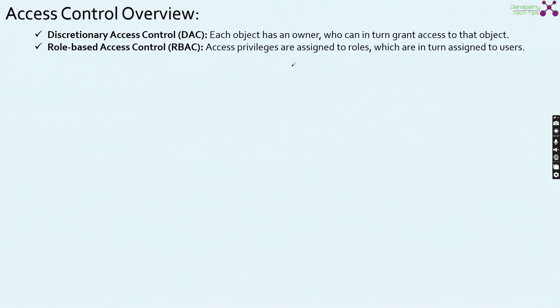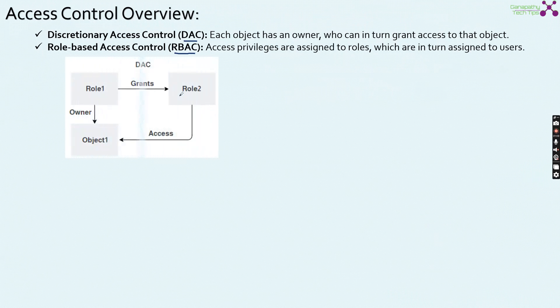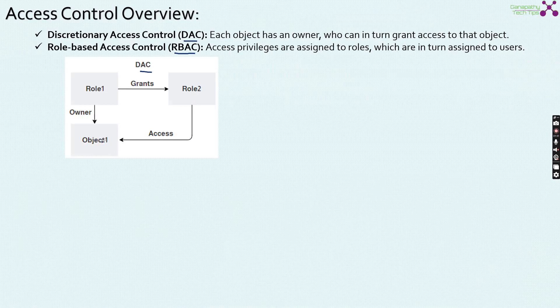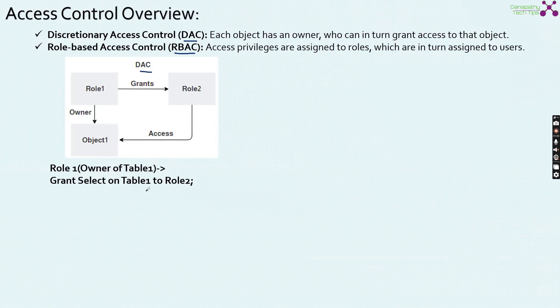First, to understand access control, we need to understand some basic concepts within Snowflake. The first thing is the discretionary access control, in which each object has an owner who can in turn grant the access to that object. The second one is the role-based access control, where access privileges are assigned to roles which are in turn assigned to users. Please look into this diagram. This is all about the discretionary access control, where object 1 is owned by role 1. Role 1 grants the access to role 2, so that role 2 can access object 1. The statement is: role 1 is the owner of table 1, so role 1 can grant select on table 1 to role 2, and role 2 will get the select access on table 1.